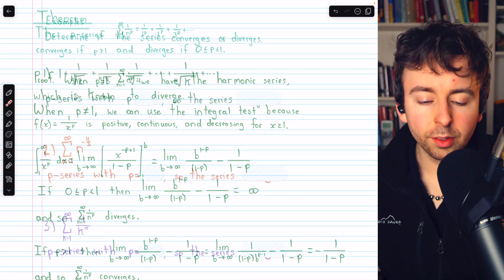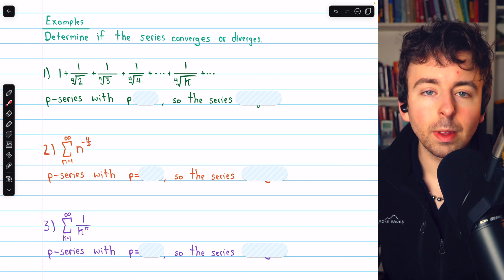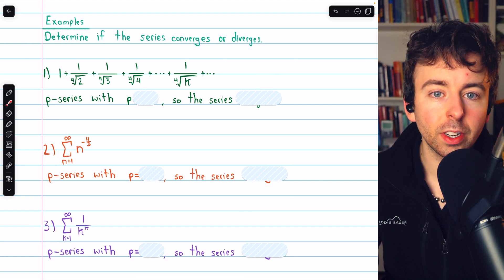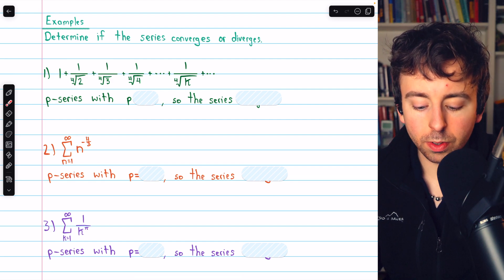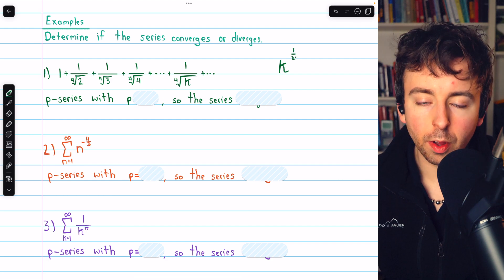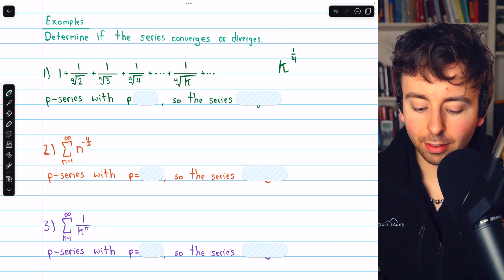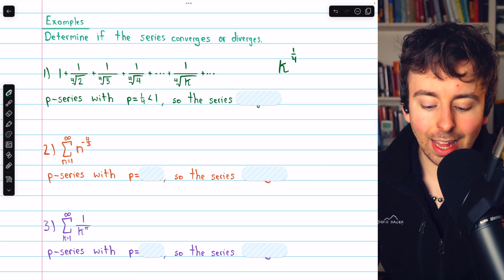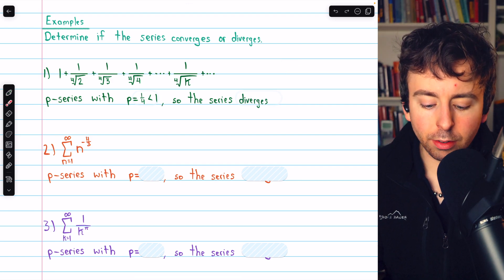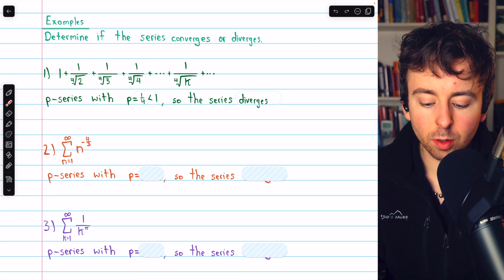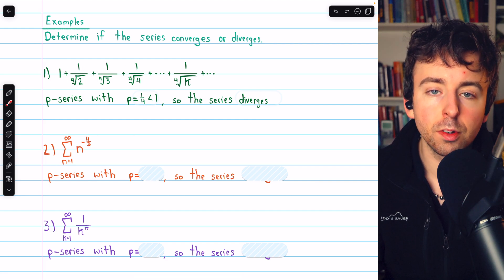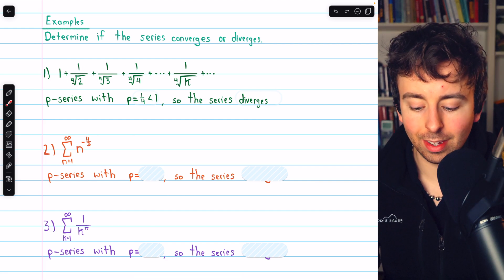Let's see some quick examples. Take a second to look at these three p-series, identify p, and determine if the series converges or diverges. In the first example, we have fourth roots in the denominators. A fourth root is the same as a power of 1 fourth. So in this case, p is 1 fourth, which is less than 1. Hence, the series will diverge. Remember, these small p values prevent the denominators from growing very quickly, which prevent the terms from getting super small super quickly. That's why the series diverges.